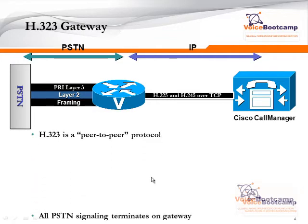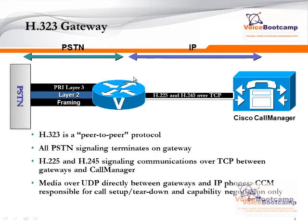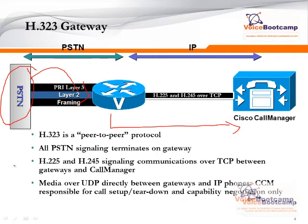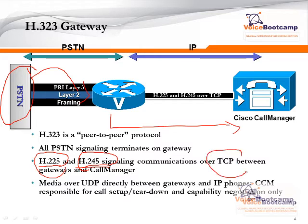H.323 gateway is a peer-to-peer protocol. When you register a Cisco router as an H.323 gateway to Call Manager, all the PSTN signals will terminate on the router itself, and then from there it goes over IP to the Call Manager. The IP side uses H.225 and H.245. H.225 is the call setup protocol that contains call setup messages such as ringing, ringback, and alerting. H.245 is the capability negotiation protocol. Both protocols use TCP port 1720 to communicate. Once the call has been established, the media or RTP traffic goes over UDP between the gateway and the phone.